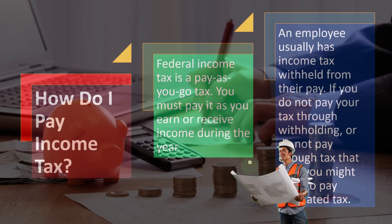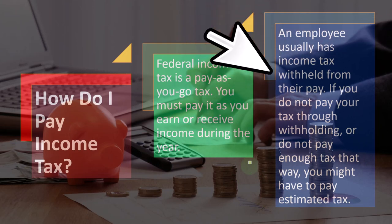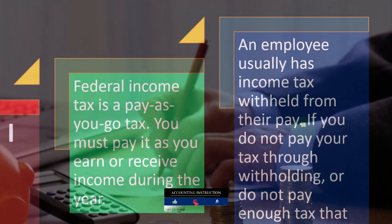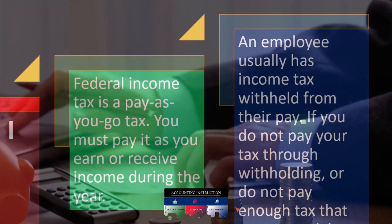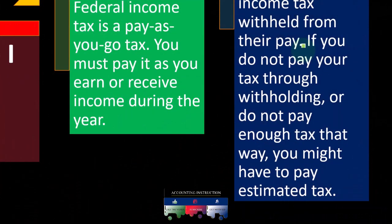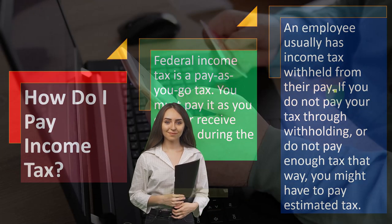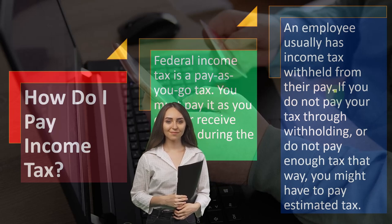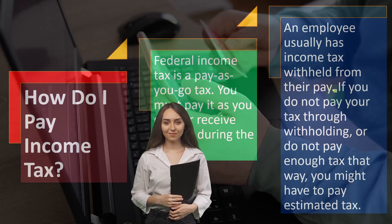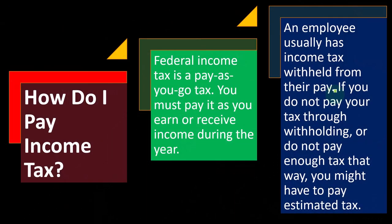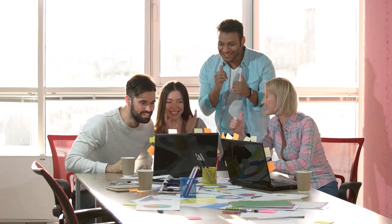An employee usually has income tax withheld from their pay — if you're a W-2 employee, it's forced to come out of your pay and the employer is forced to be the tax collector. One problem with our tax system is that the government is trying to make things so automatic that individuals are all employees rather than contractors, and the employers take care of the system so that people don't fully understand what's happening because they're not actively participating.